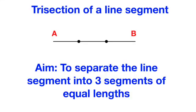Given a straight line segment AB, our aim is to eventually separate it into 3 line segments of equal length, using only a compass and a straight edge, which you can think of as a ruler without length markings.